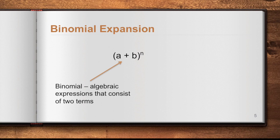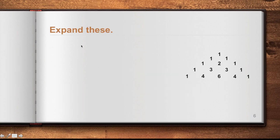And n, which is the index or the exponent, must be a positive integer. A common example is (a + b) to the power of 2, where we are expanding that binomial to the power of 2. Let's try to expand the following.